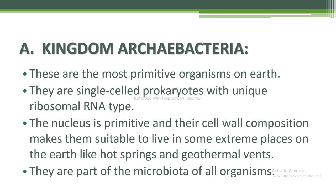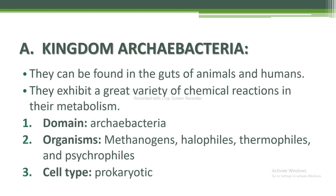First is kingdom Archaebacteria. These are the most primitive organisms on earth — single-celled prokaryotes with a unique ribosomal RNA type. The nucleus is primitive and their cell wall composition makes them suitable to live in extreme places like hot springs and geothermal vents. They are part of the microbiota of all organisms and can be found in the guts of animals and humans, exhibiting a great variety of chemical reactions in their metabolism. Their domain is Archaebacteria. Organisms include methanogens, halophiles, thermophiles, and psychrophiles.